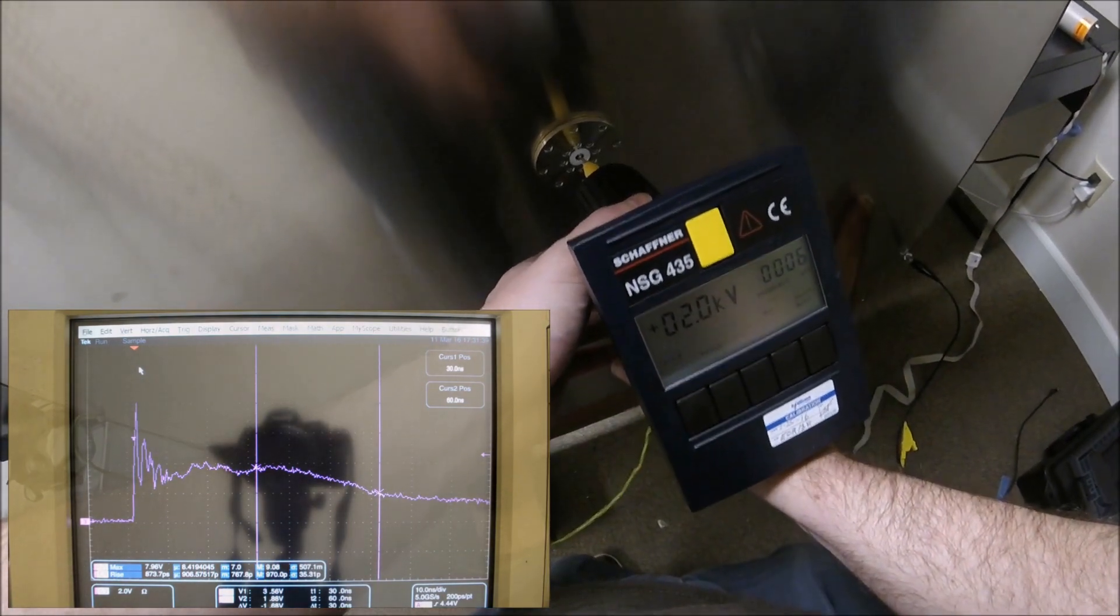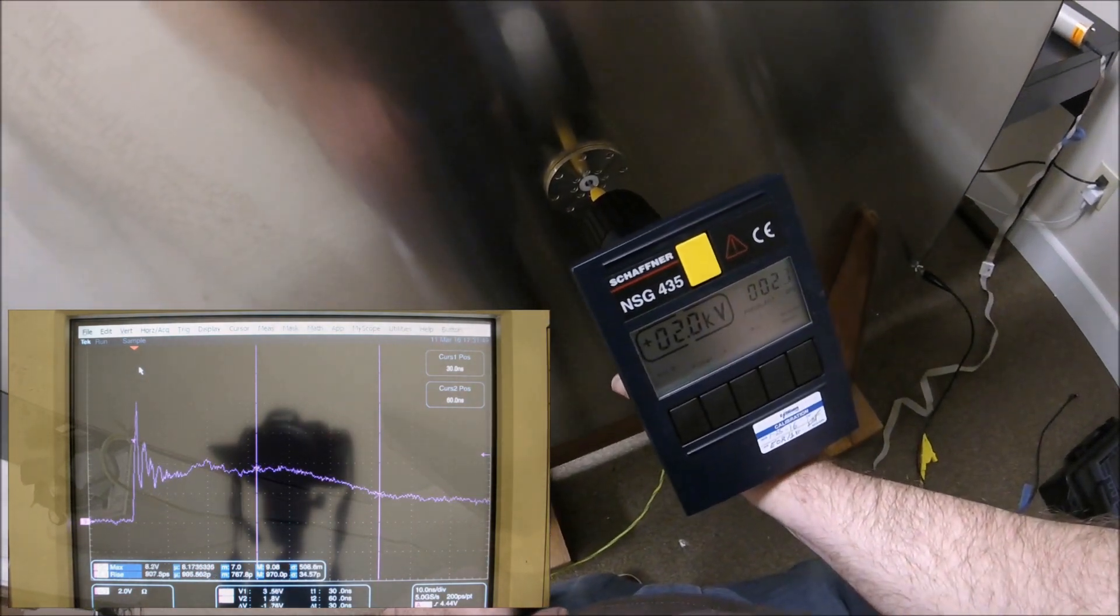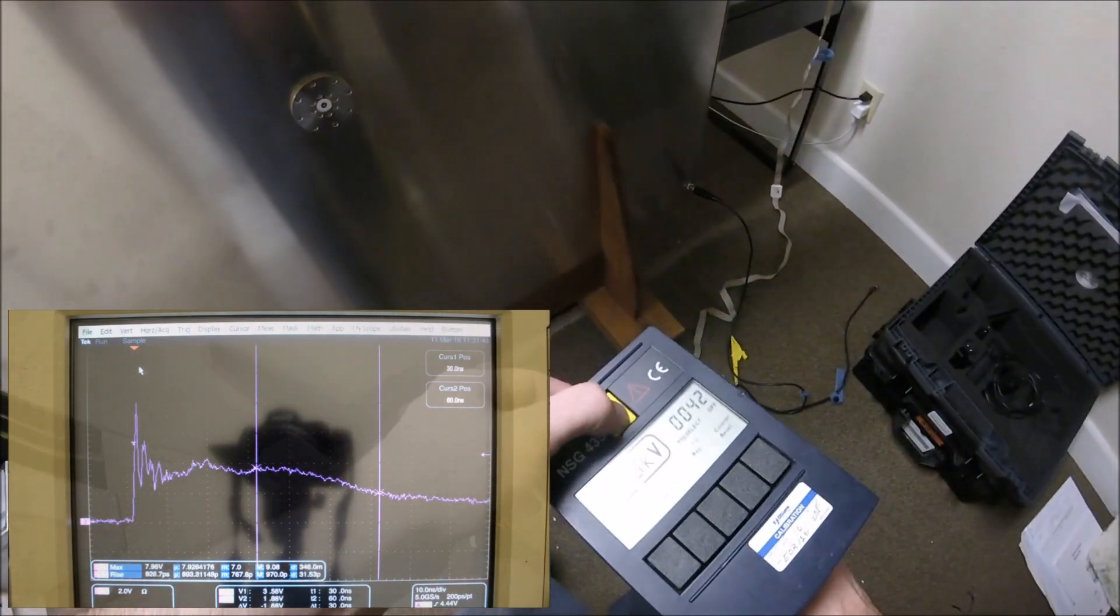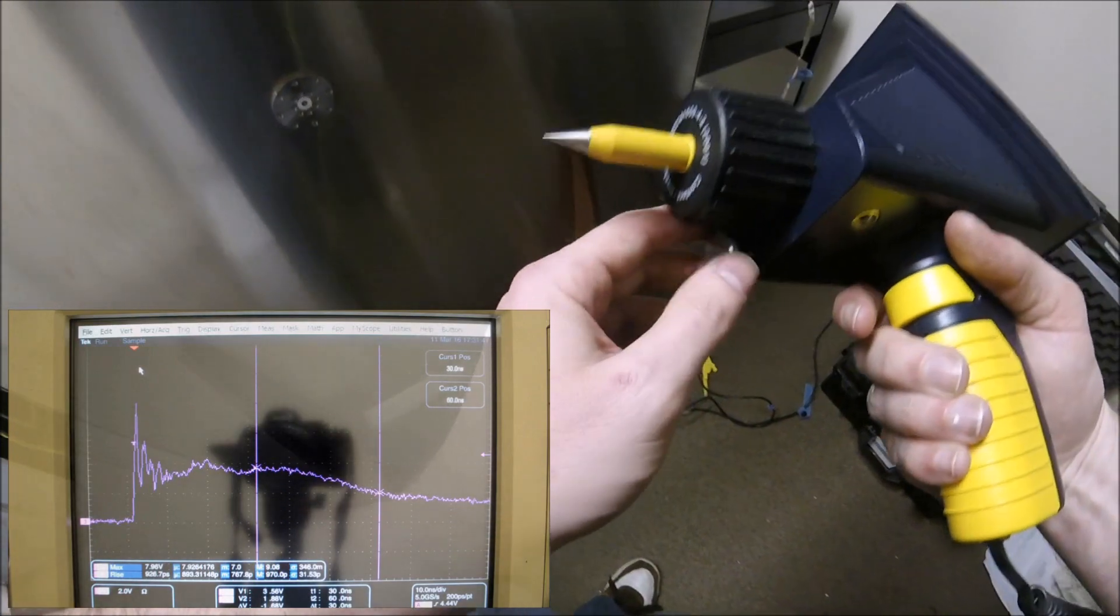We'll program the unit for 20 Hz. Keep in mind, we're going to circle around and do the same thing at 8 kV, the highest level for contact discharge immunity in the IEC standard.